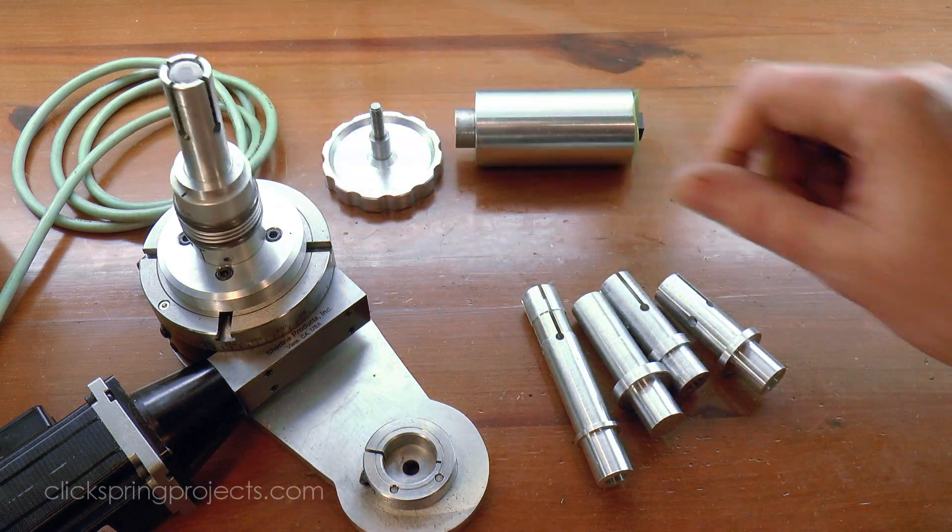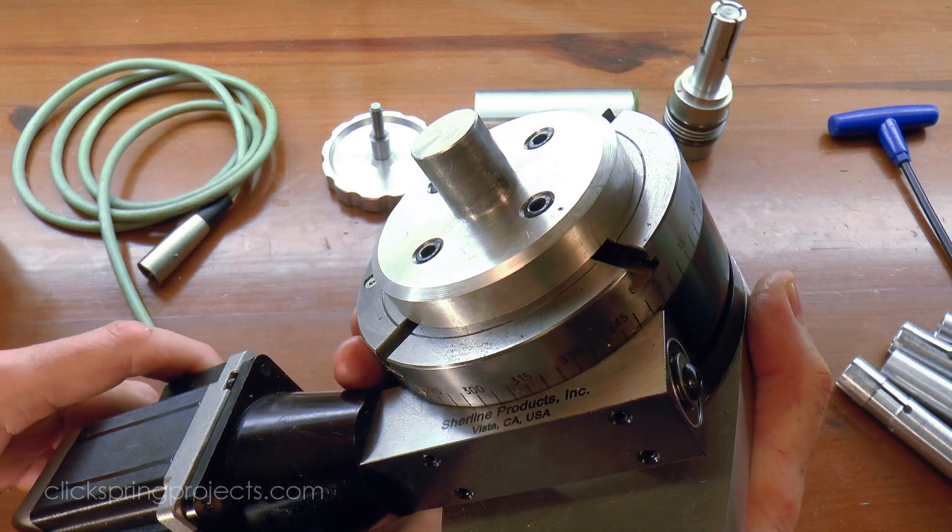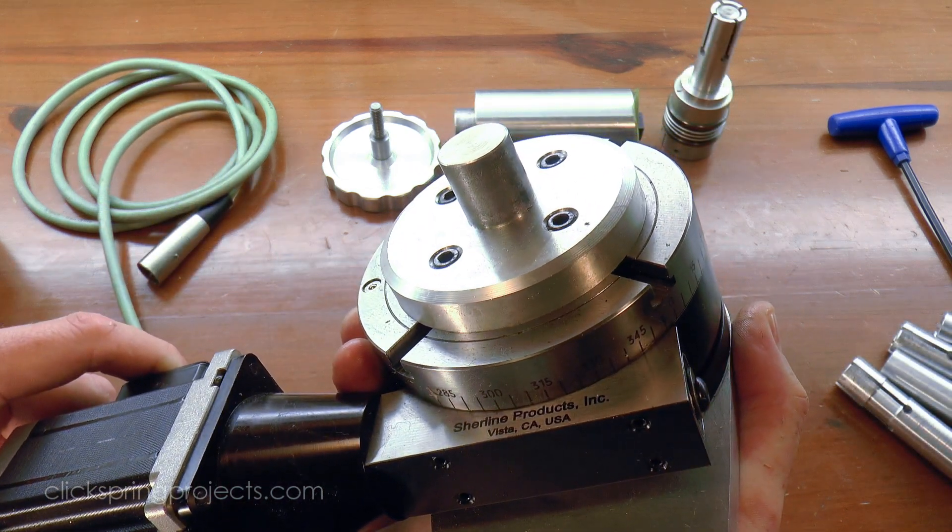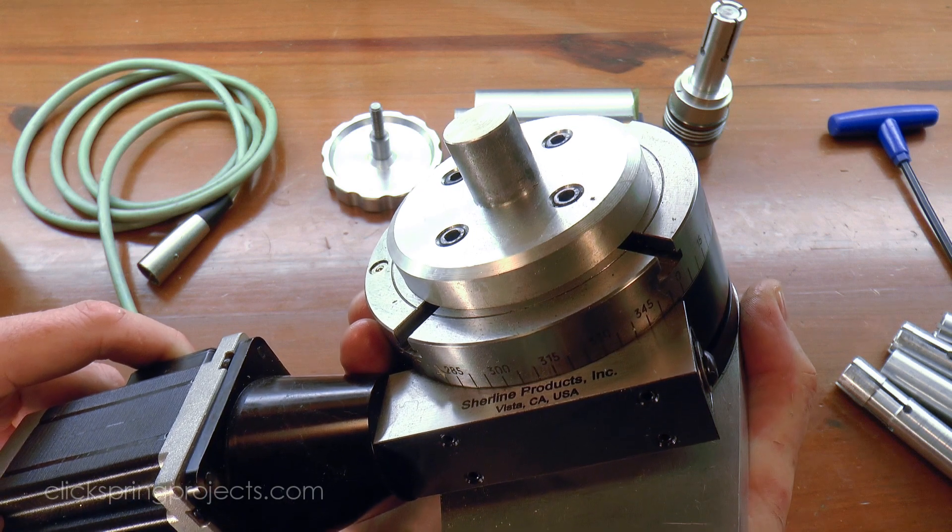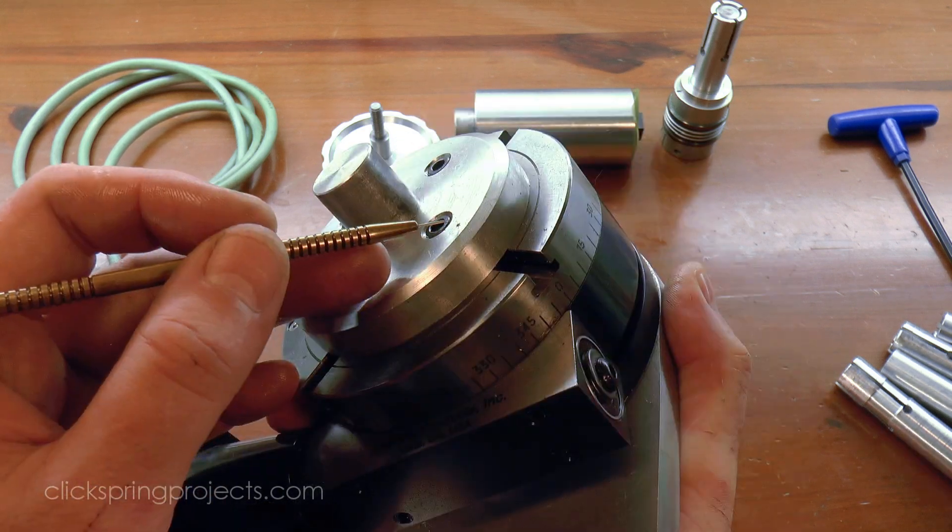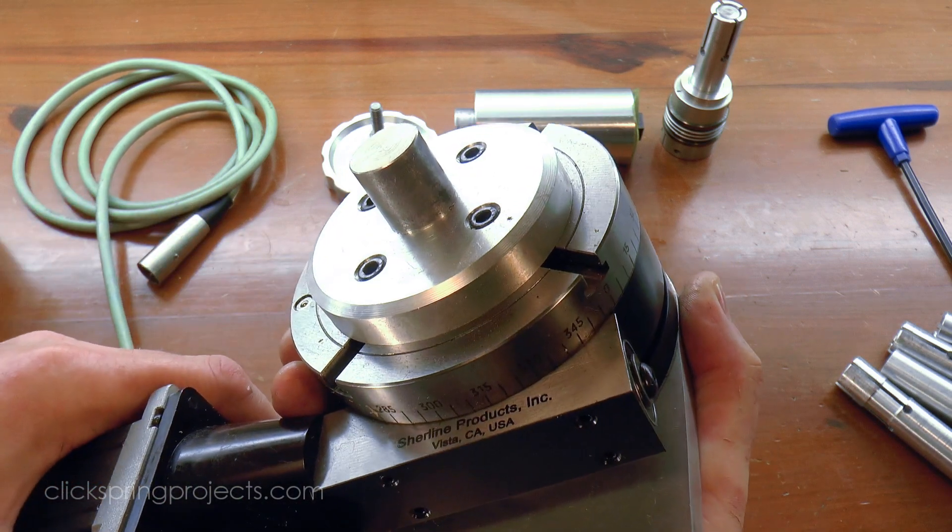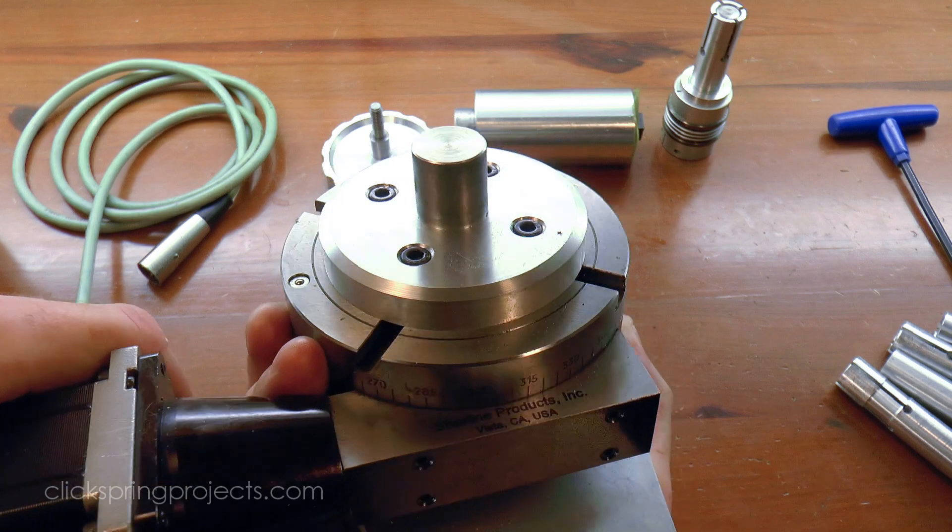The rotary table now sits as solid as a rock on the lathe centre line throughout the full rotation. It's also worth mentioning that the Sherline table had a small run out error too, which I solved in a similar way. The spigot was formed in place on the mill, and much like the mandrel, I've put a witness mark in place to make sure that it goes into the correct position each time that I use it.